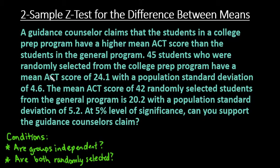The situation we have is a guidance counselor claims that the students in a college prep program have a higher mean ACT score than students in the general program. 45 randomly selected students from the college prep program have a mean ACT score of 24.1 with a population standard deviation of 4.6. The mean ACT score of 42 randomly selected students from the general program is 20.2 with a population standard deviation of 5.2. At the 5% level of significance, can you support the guidance counselor's claim?